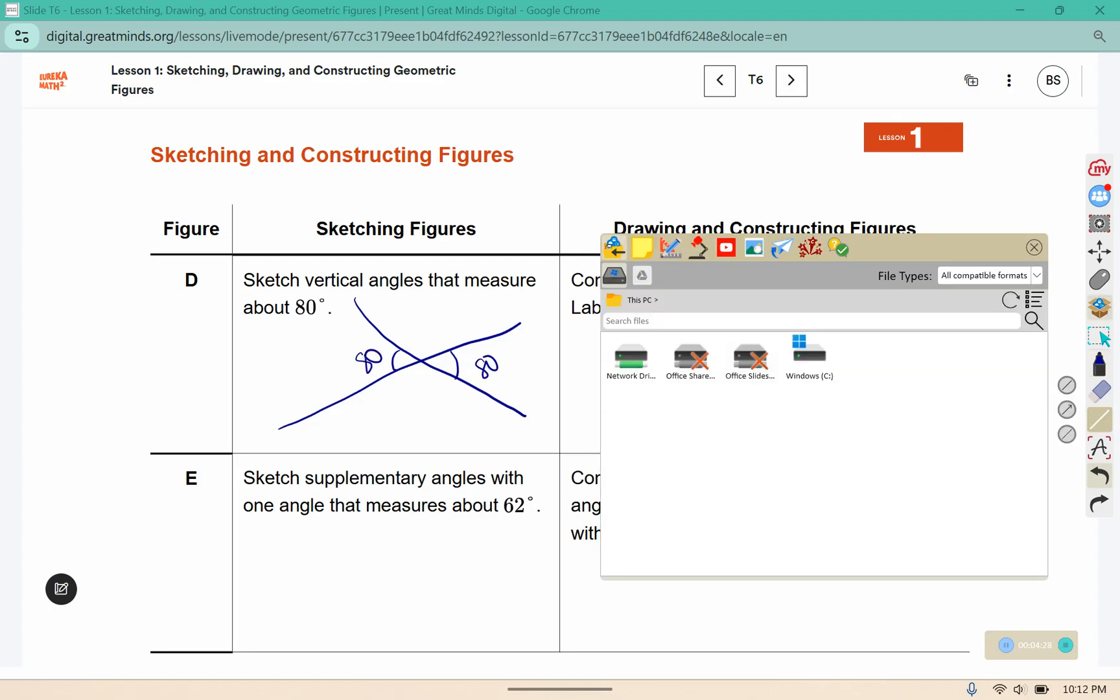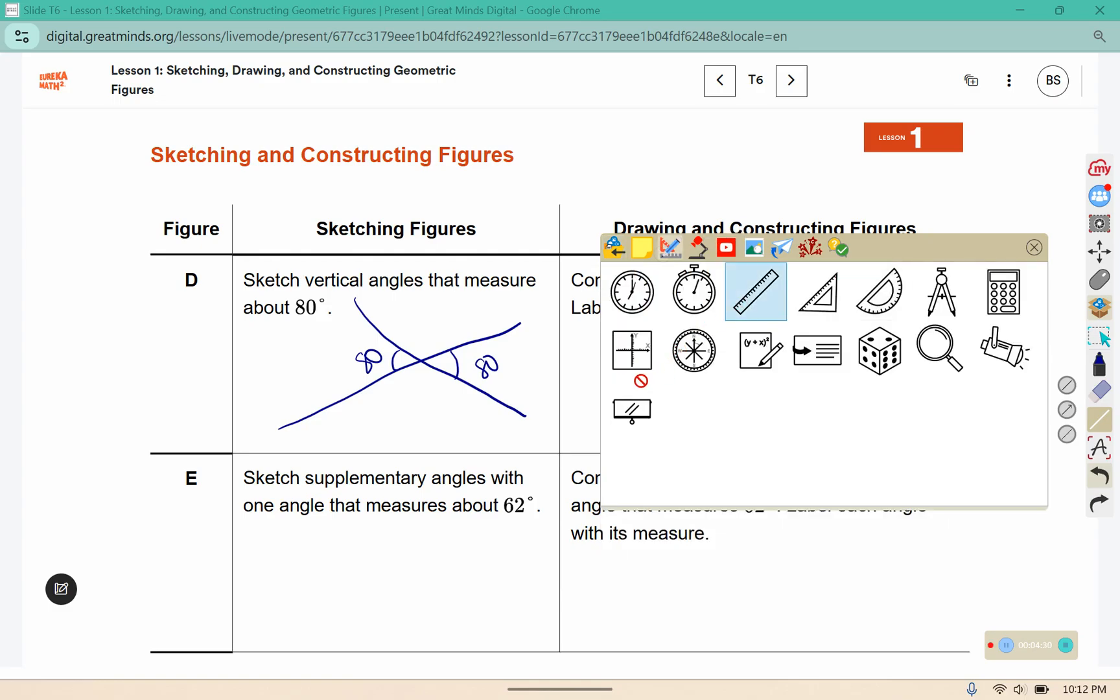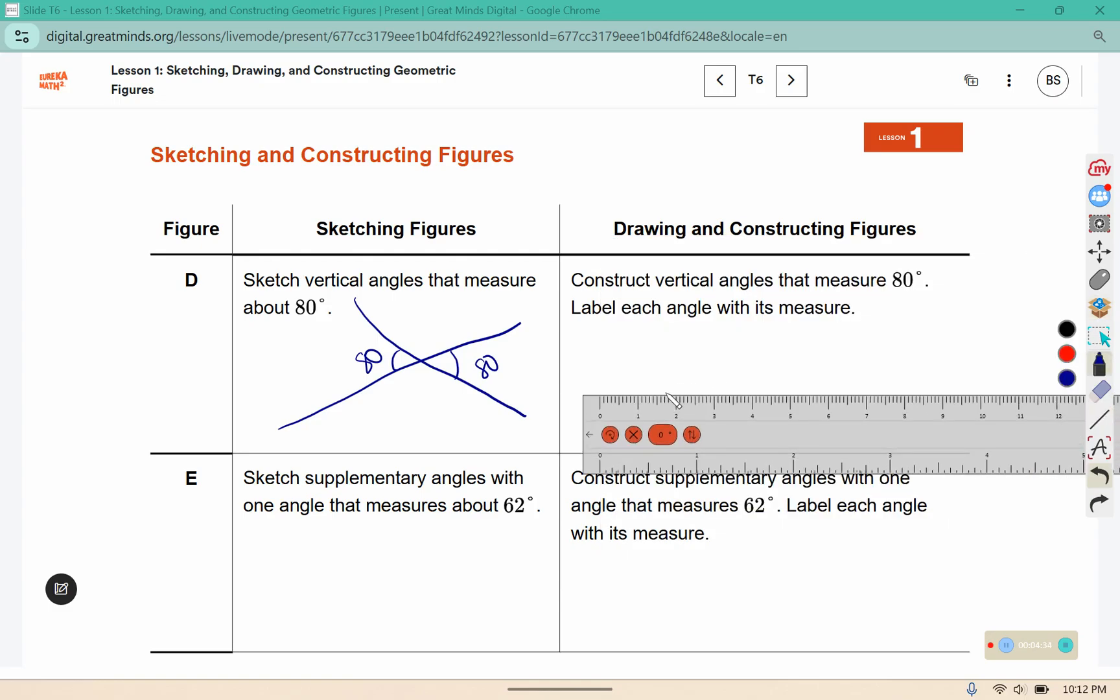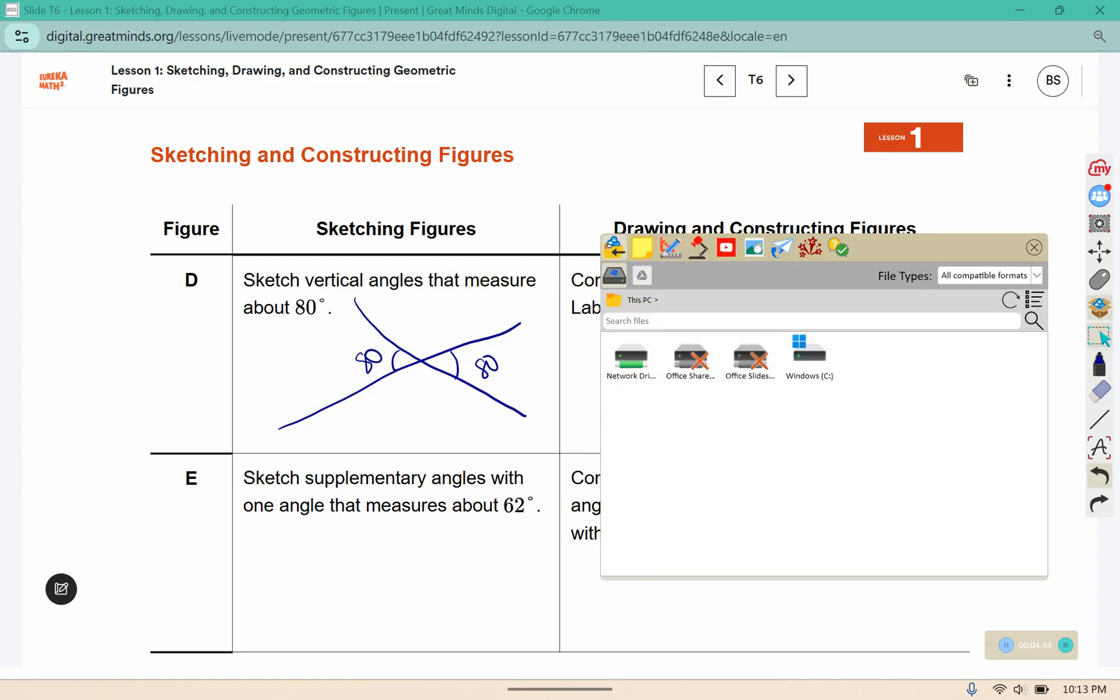Here we're going to draw using our straight edge or our ruler, a line to start, and place a dot in the center to use as a guide for our protractor.